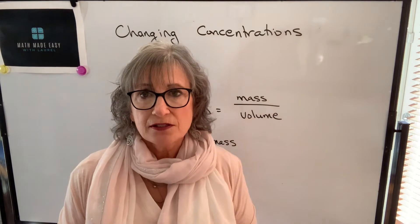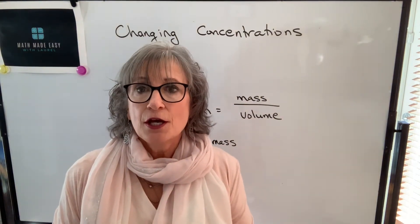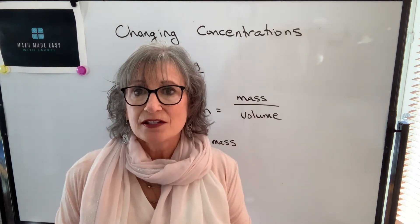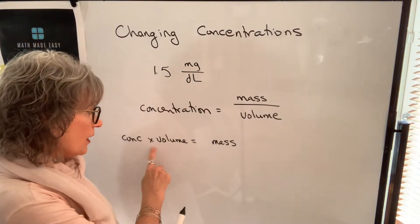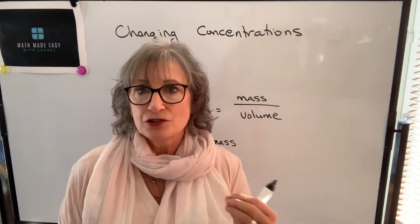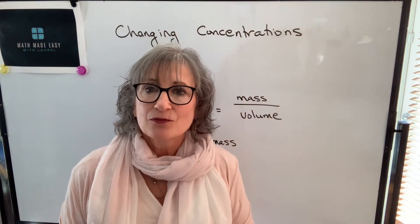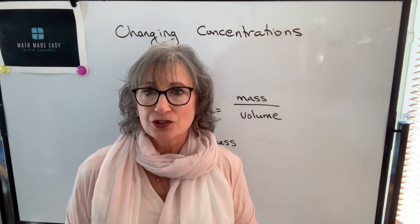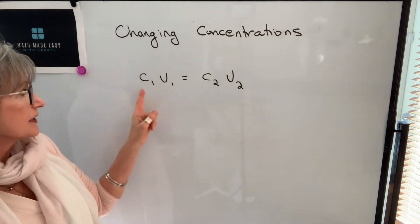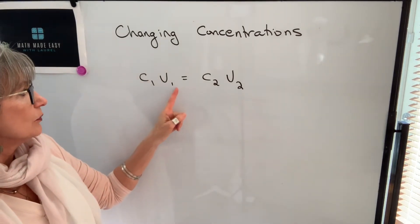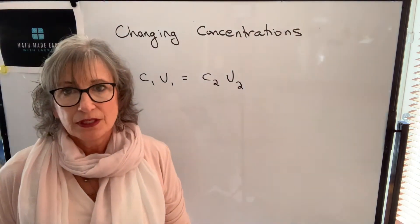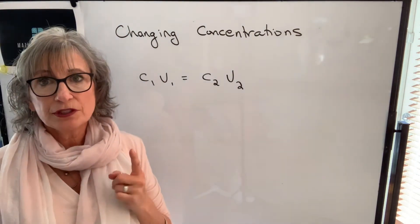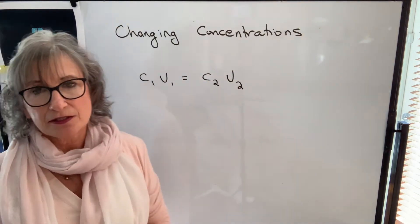When you take a solution and dilute it, you get a new solution. But the mass of the solute in both solutions is the same, which means concentration times volume in the first solution equals concentration times volume in the second solution. That's the formula we'll use when changing the concentration of a solution. It looks like C1V1 equals C2V2, where C1 and V1 represent the concentration and volume of the first solution.